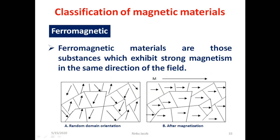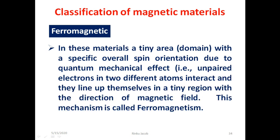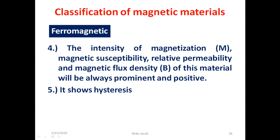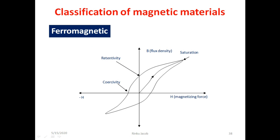Now we move on to ferromagnetic materials. These are substances which exhibit strong magnetization in the same direction of the field. In these materials, a tiny area called a domain has a specific overall spin orientation due to quantum mechanical effects — unpaired electrons in two different atoms interact and line up in a tiny region with the direction of a magnetic field, a mechanism called ferromagnetism. When a rod of this material is placed in a magnetic field, it rapidly aligns itself in the direction of the field and is strongly attracted by the external magnet. Ferromagnetism is not present in liquids and gases. The intensity of magnetization, magnetic susceptibility, relative permeability, and magnetic flux density are always prominent and positive. It shows hysteresis, and the area formed by the hysteresis curve gives the energy loss in one cycle of magnetizing and demagnetizing the ferromagnetic material.